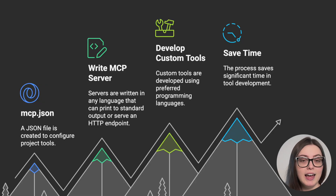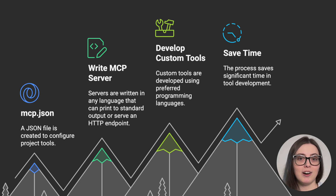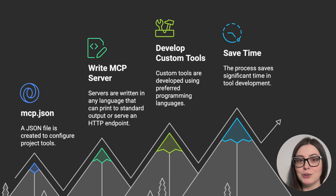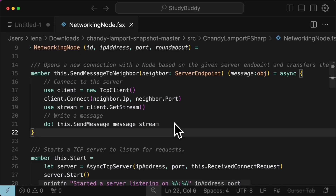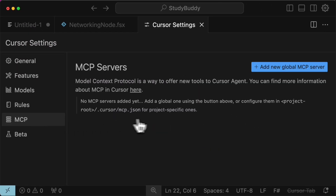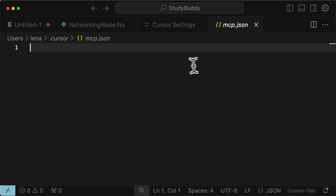We create a configuration file at .cursor/mcp.json for project-specific tools. The most powerful part is that MCP servers can be written in any language that can print to standard output or serve as an HTTP endpoint. This means we can create custom tools using our preferred programming language in minutes, and this tip saves significant time. Right now, I'm in my cursor IDE. To add an MCP server, go to Settings, Cursor Settings, and navigate to the MCP tab where you can add a new global MCP server. Here you can see the mcp.json file, where you will add configurations for all of the MCP servers that you want to add.